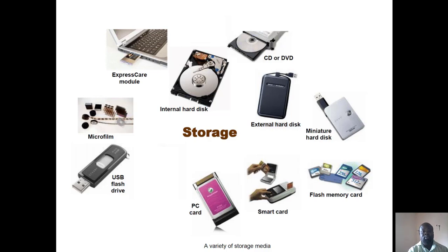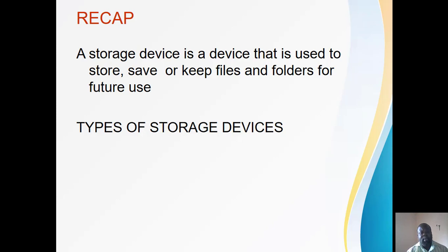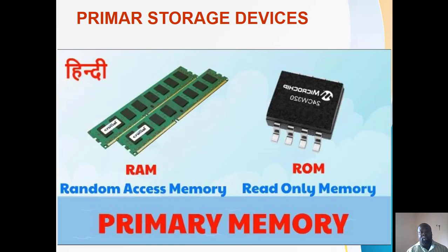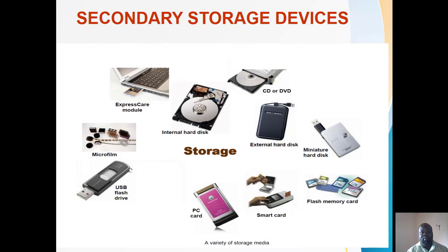To recap what we've learned today: a storage device is a device used to store, save, or keep files and folders for future use. We talked about the types of storage devices — the primary storage device, which is fixed into the computer system. We also talked about the secondary storage devices, which are in the form of peripherals — they can be upgraded at any time, taken off the computer, and reconnected.